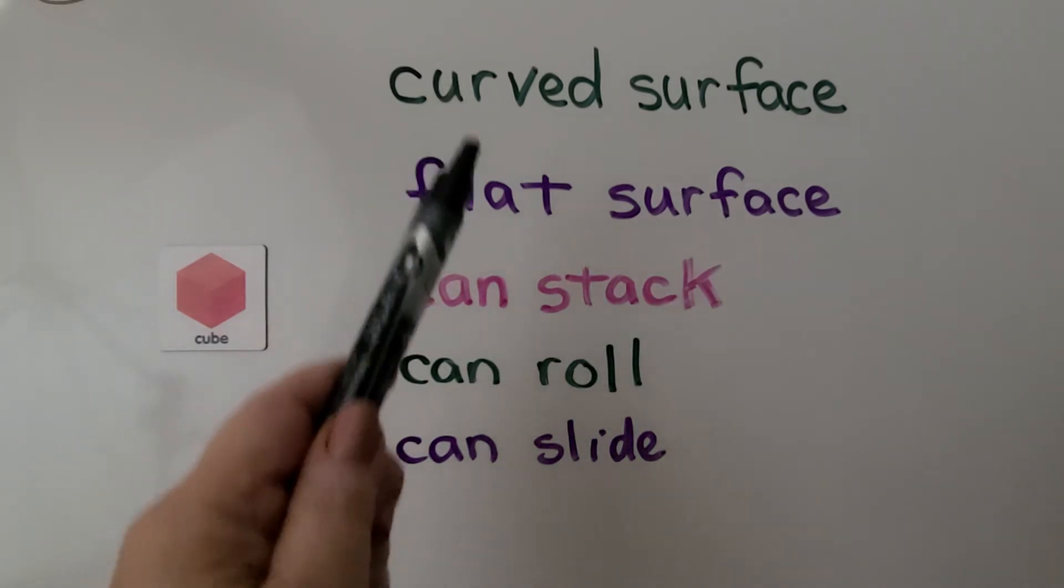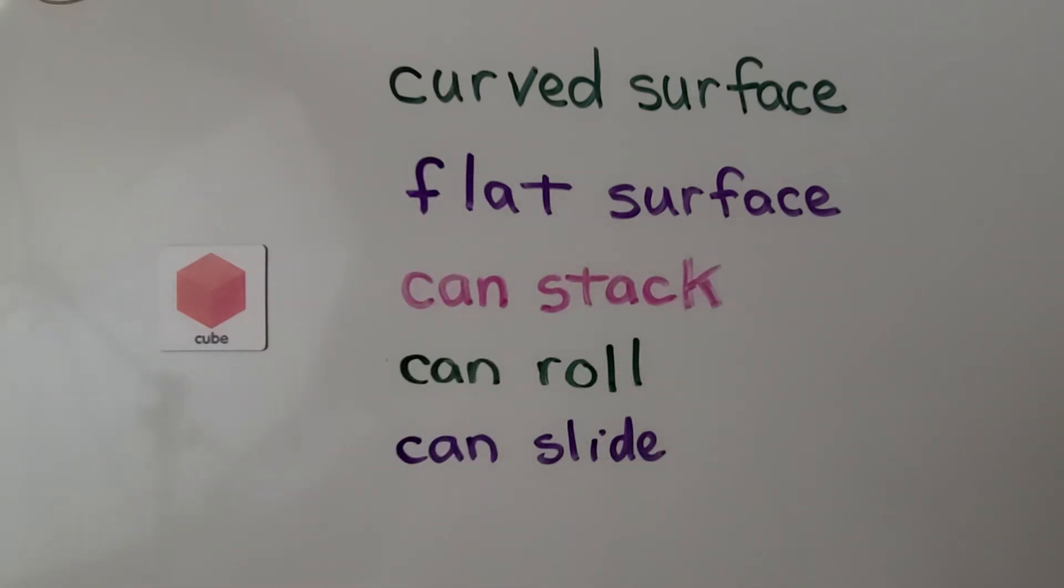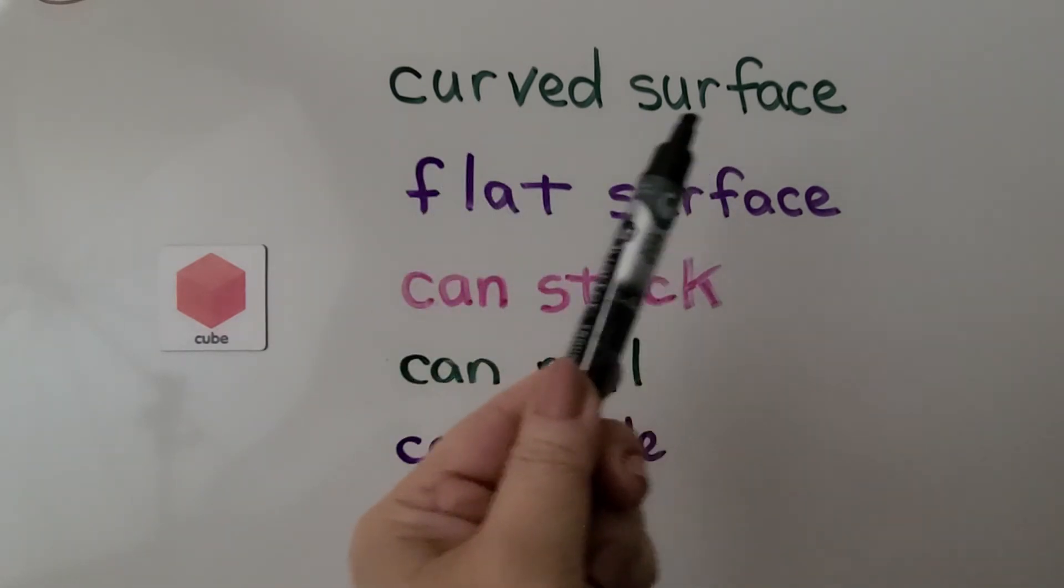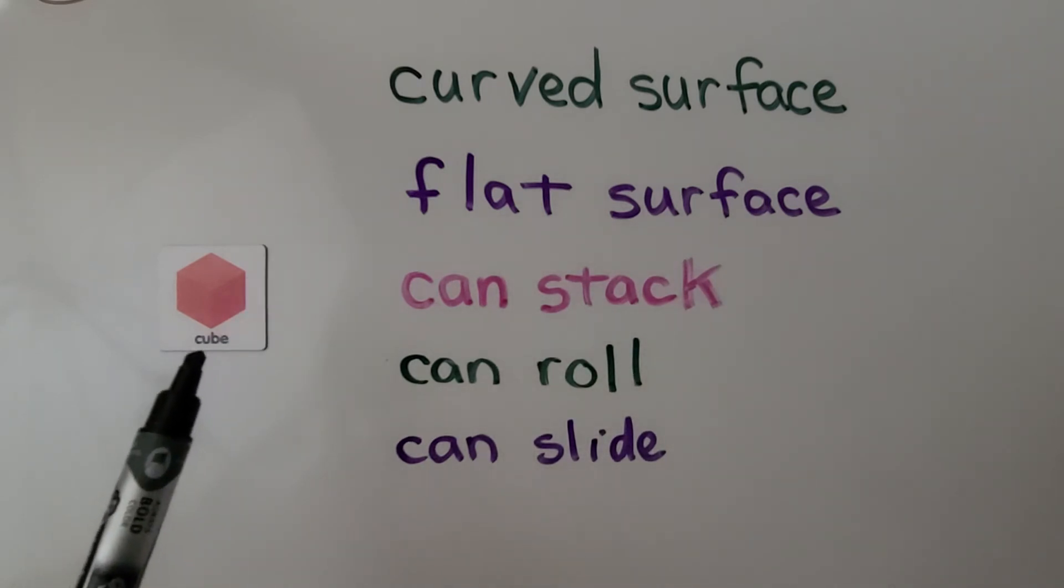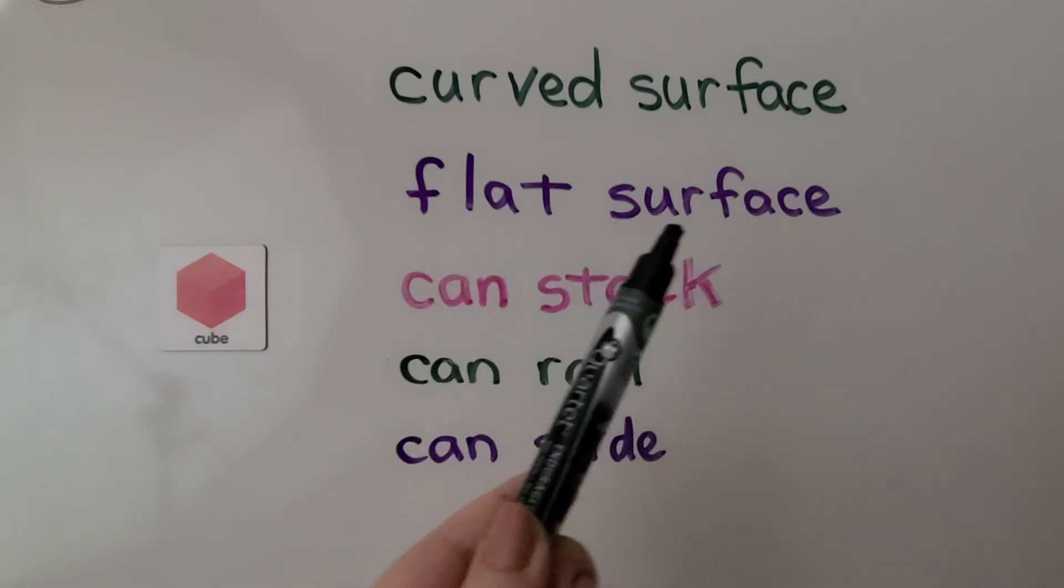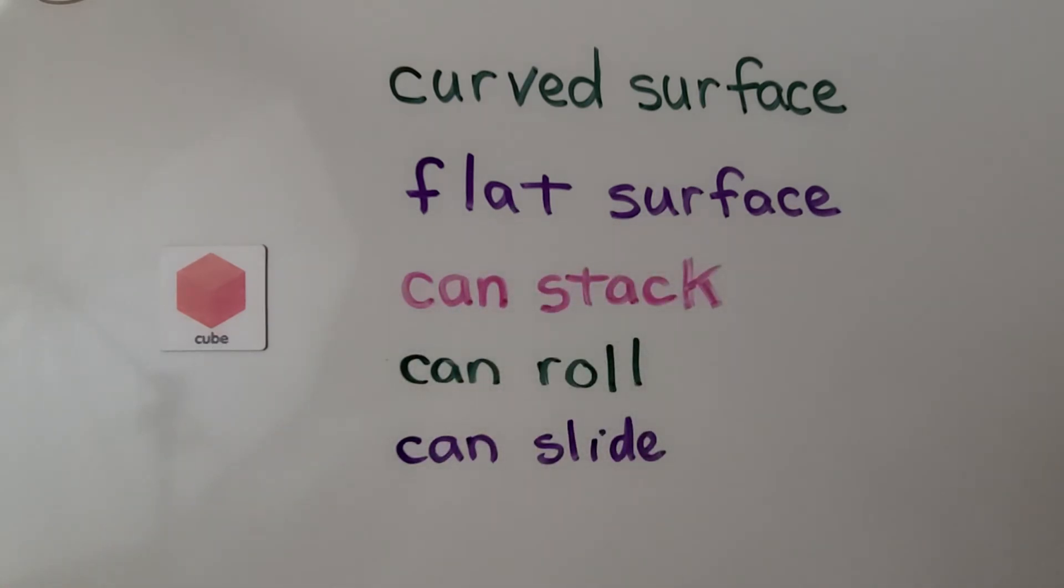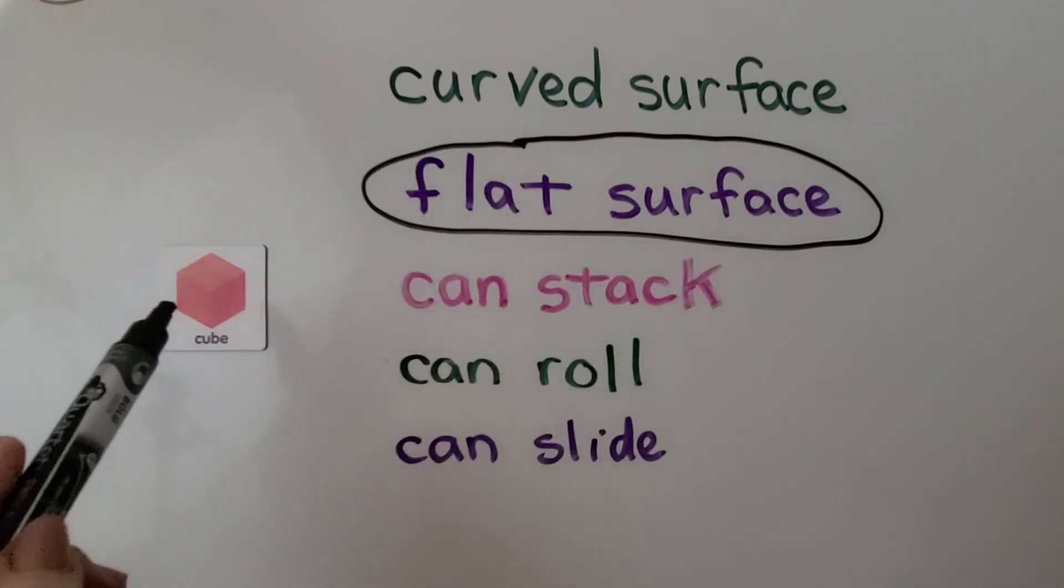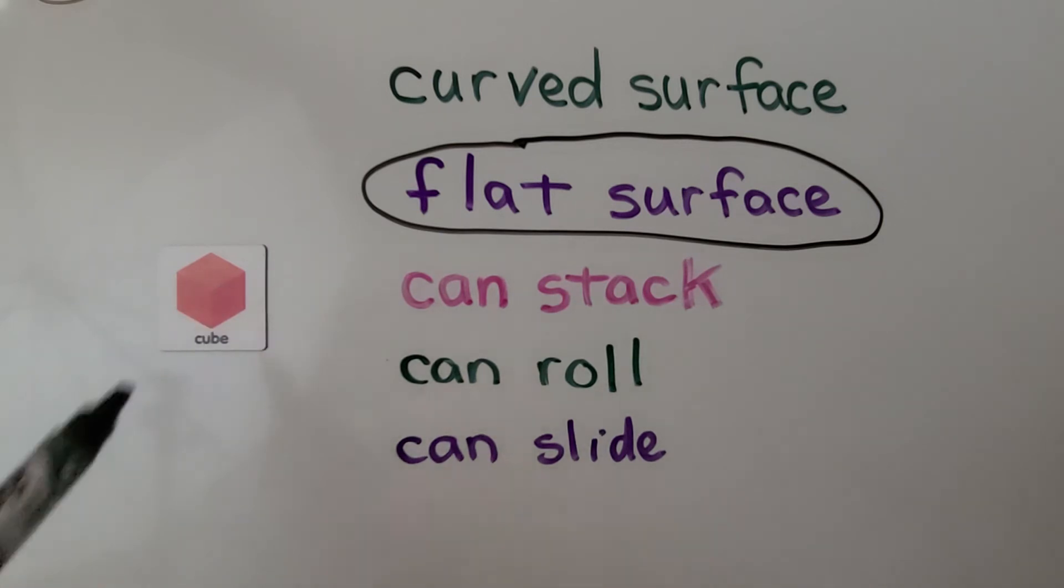We need to circle the words that describe a cube. This says curved surface. Does that describe a cube? Are there curved surfaces on a cube? No. So we're not going to circle curved surface. Flat surface. Does a cube have flat surfaces? If you said yes, you're correct. A cube can be described as flat surface. There are flat surfaces.